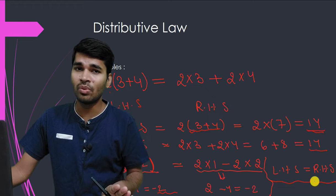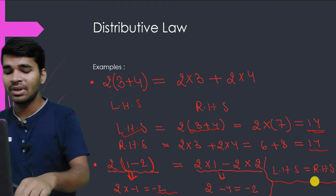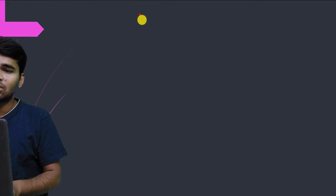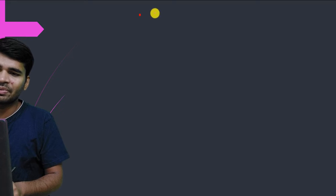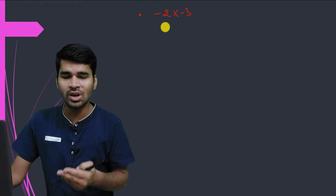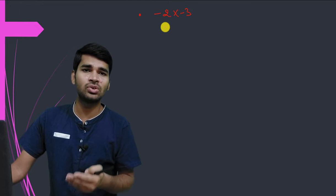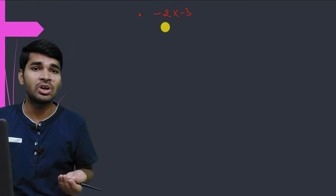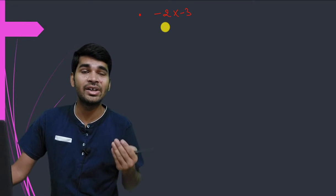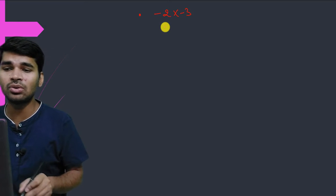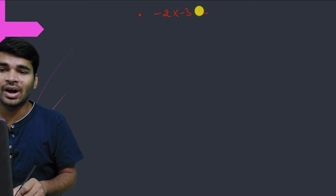Now we are going to prove why negative times negative is positive. Suppose we take (-2) times (-3). We don't know what this is, because we don't know what negative times negative gives. That's why we are unable to get the result directly.